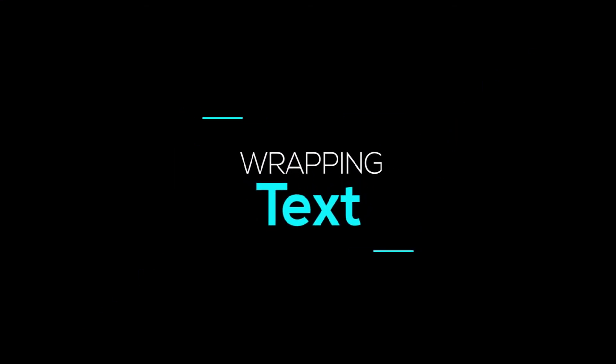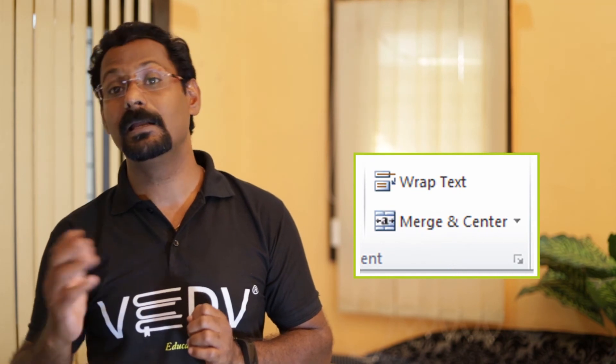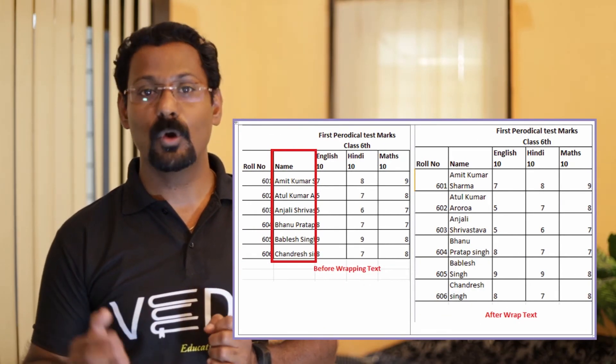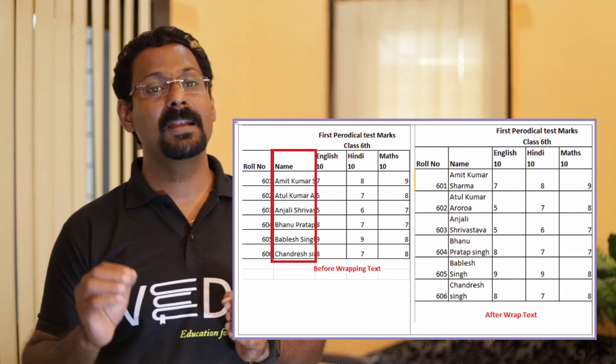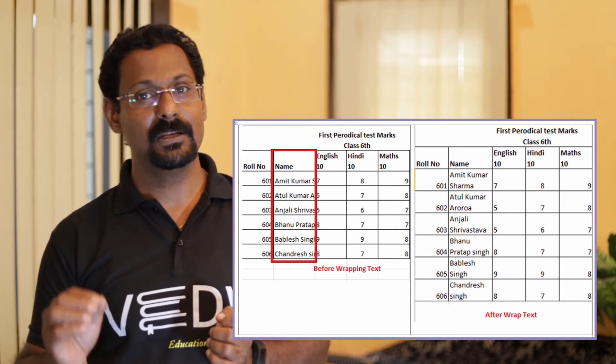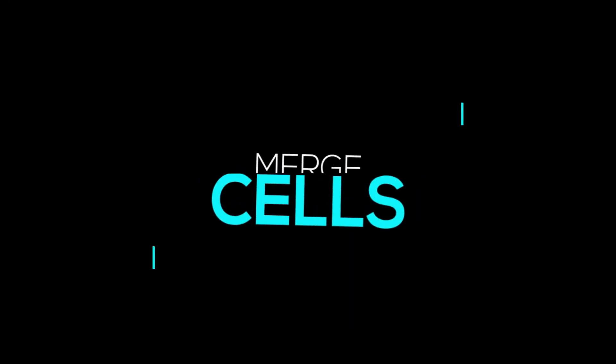Wrapping text: sometimes the text you type in a cell is too long, it does not fit in the cell and is hidden on the right side. The Wrap Text command shows the hidden text in multiple lines. To wrap text, follow these steps. Number one: select the cell with the text that you want to wrap. Number two: select the Wrap Text command from the Home tab. Number three: the text in the selected cell will be wrapped in your worksheet.